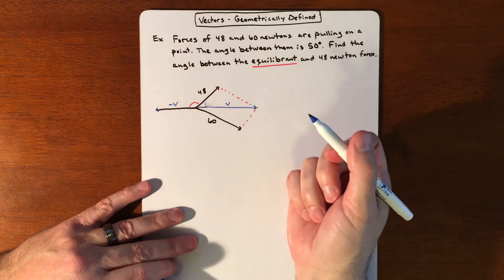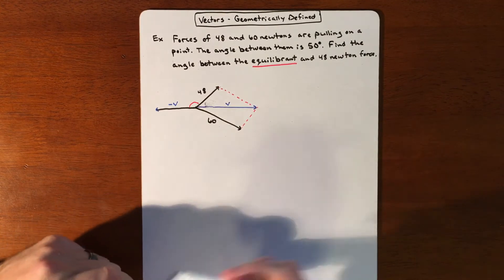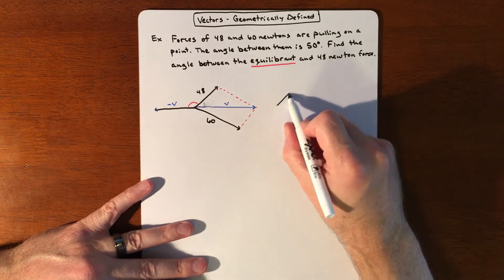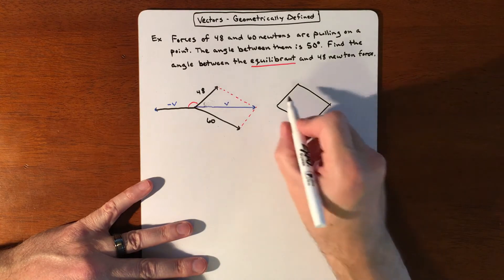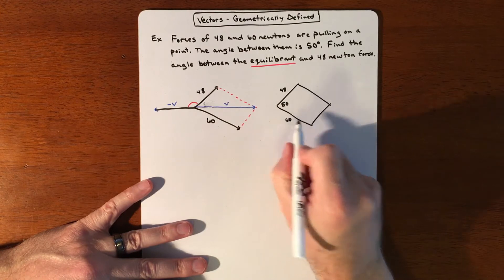So what do we know? It goes into the parallelogram, so we do have this parallelogram. So we'll kind of start to break up some of the pieces here. As far as our parallelogram goes, we know that we have a 48, we know that this is 50, and we know that this is 60.